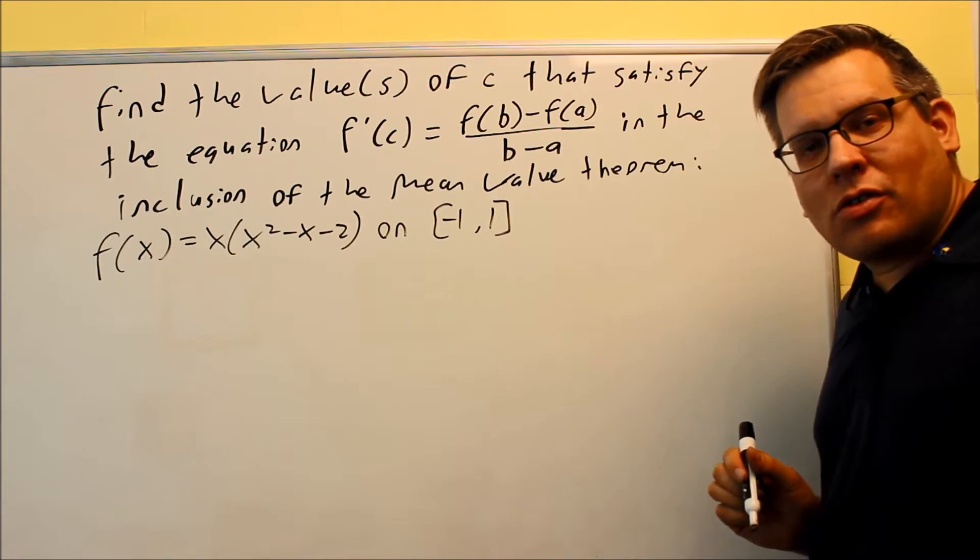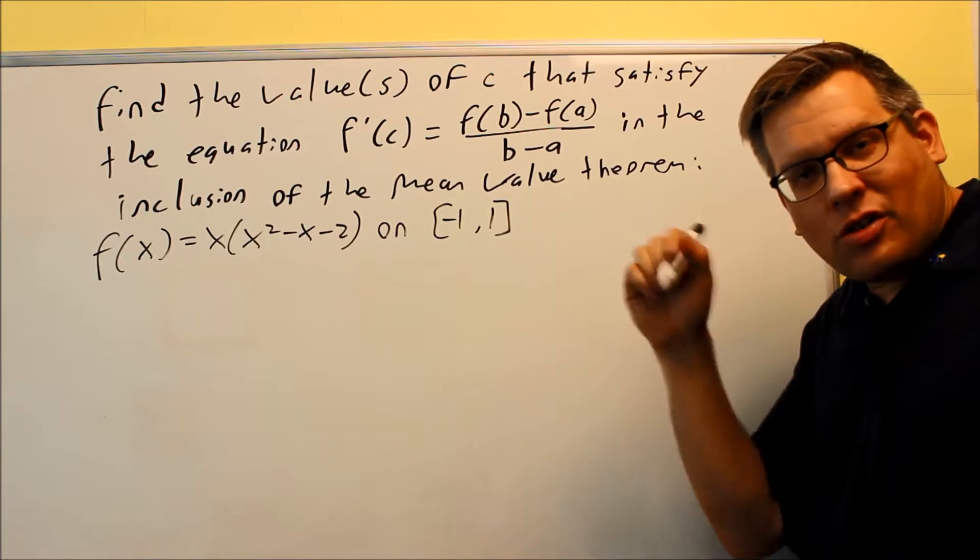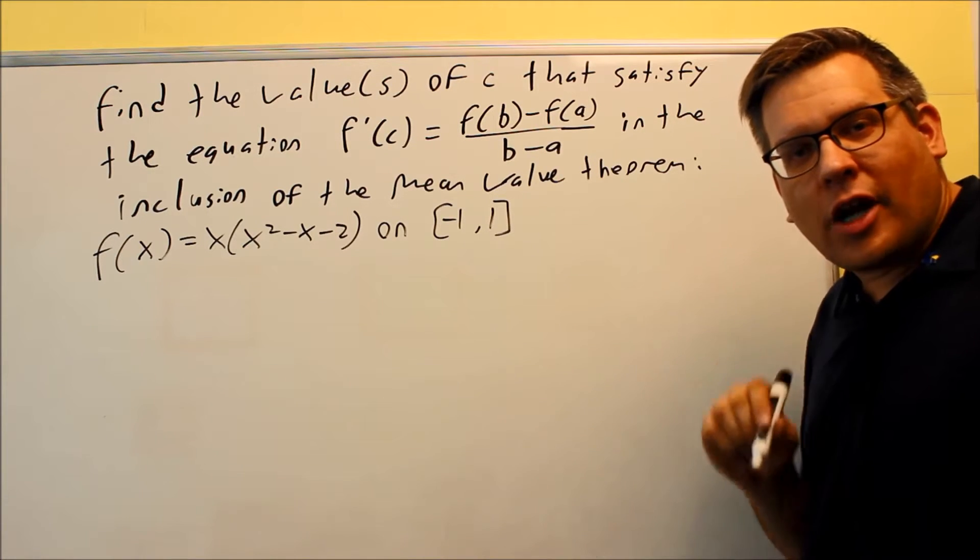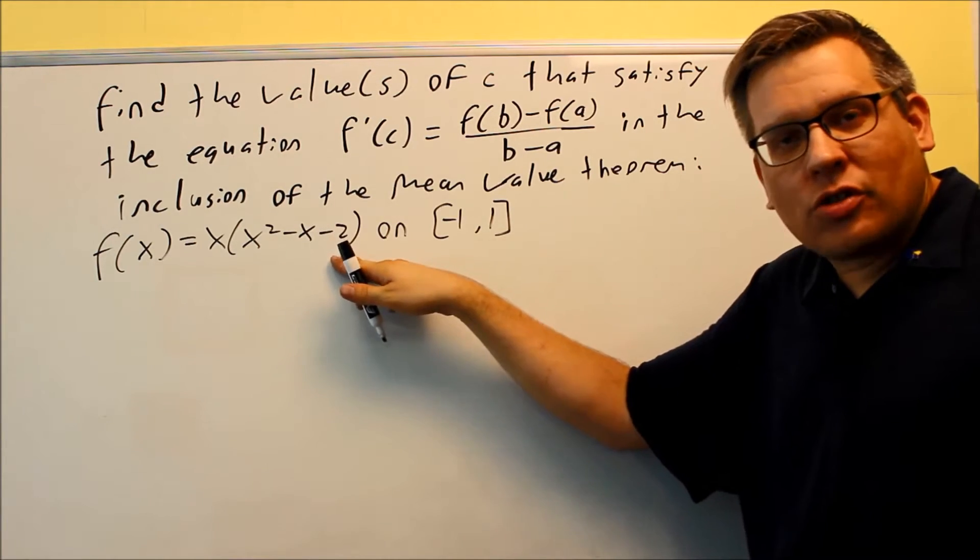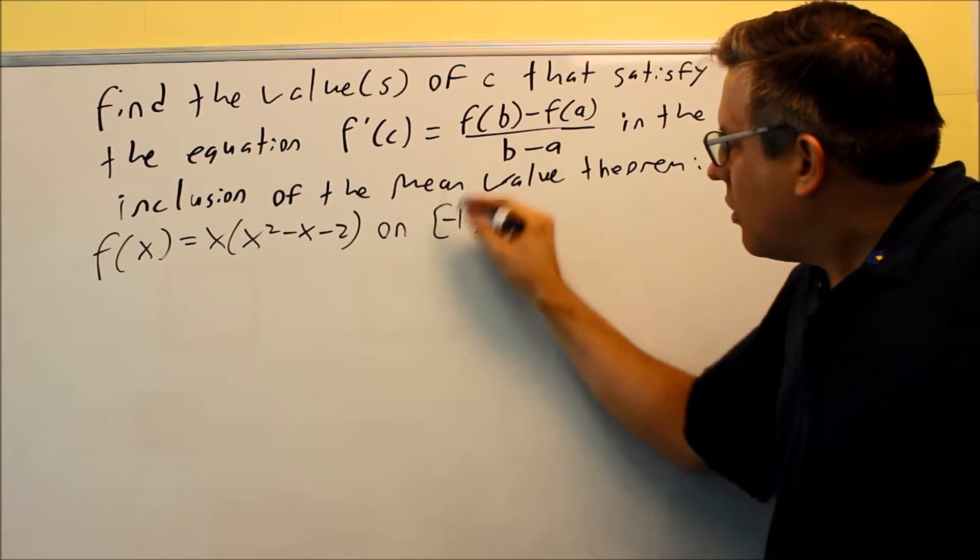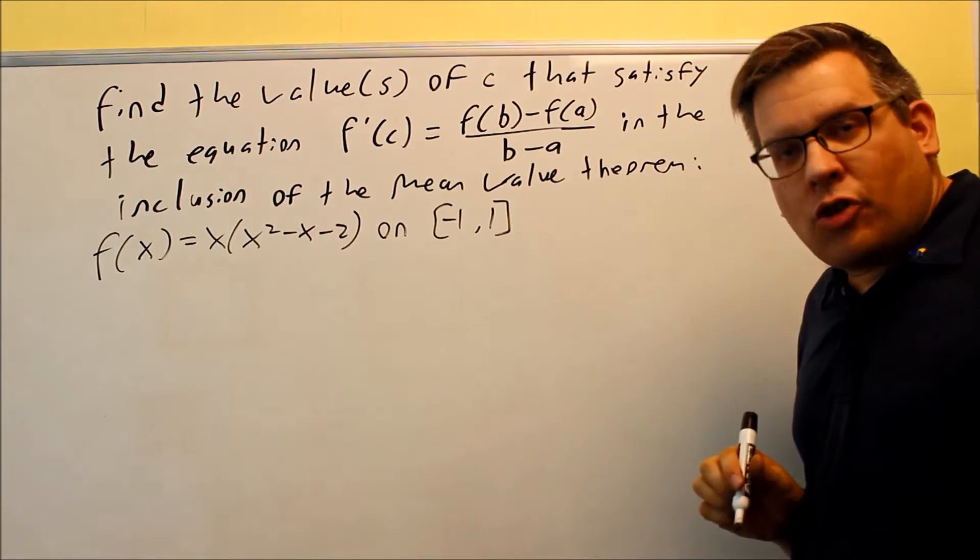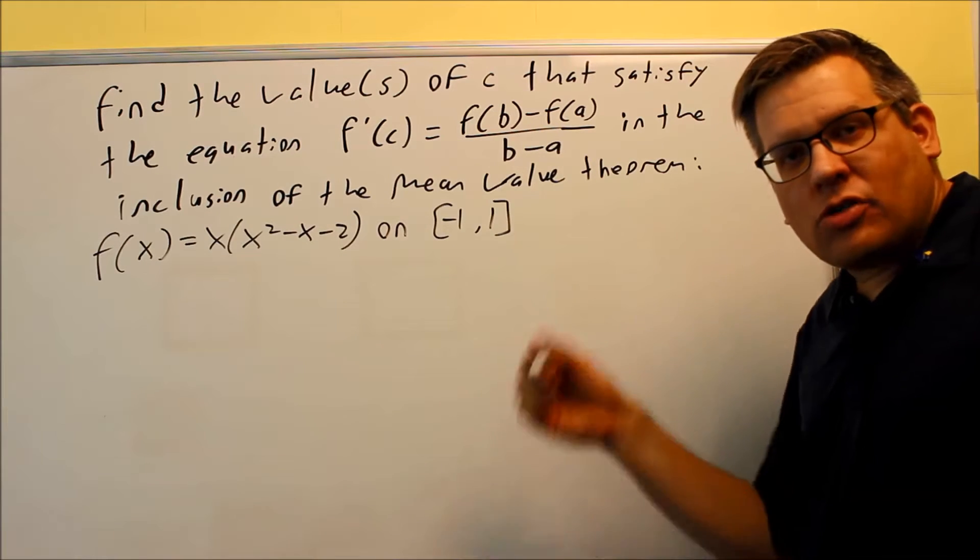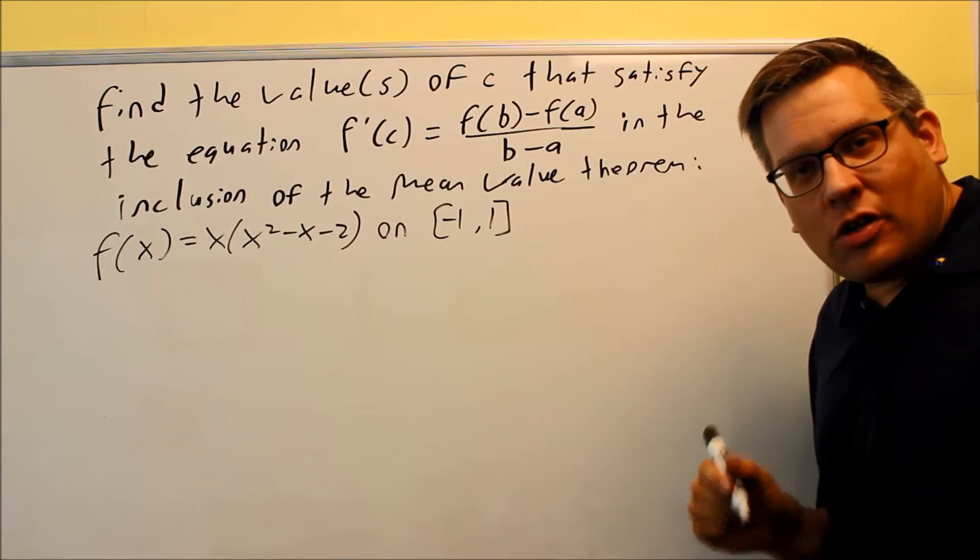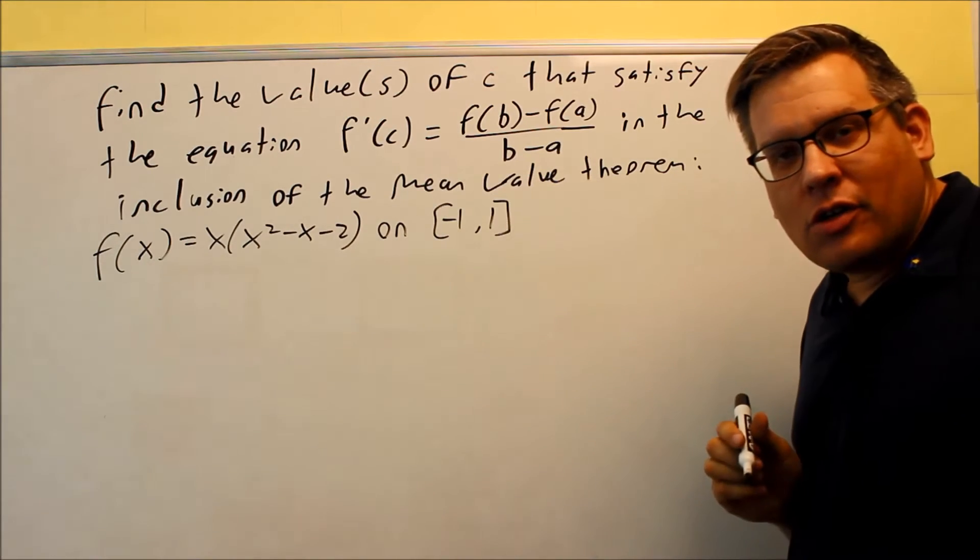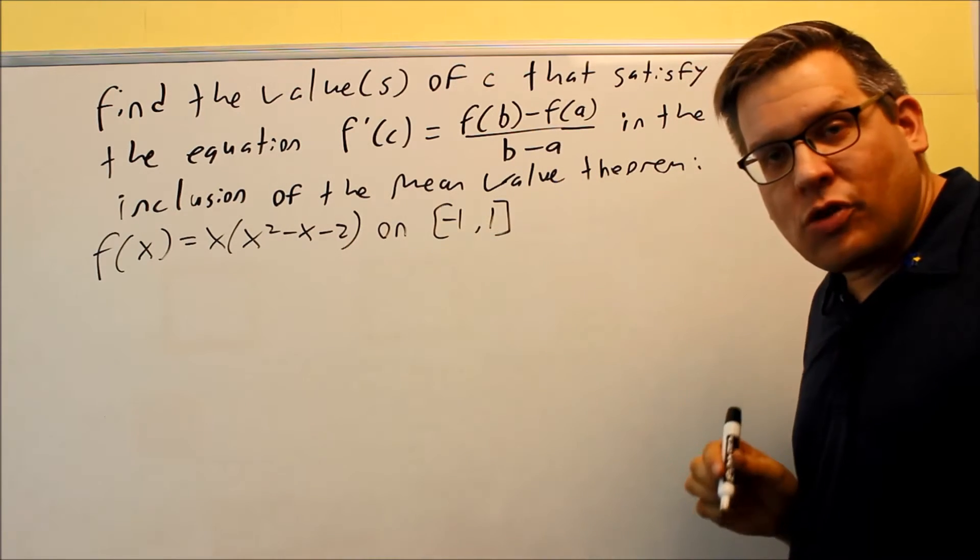The first thing we have to do, so I'm assuming you've already watched the previous video that talks about all the conditions where the mean value theorem can be applied. The first one is that the function is continuous, the original function is continuous on the closed interval from A to B. We see right here that this is going to be a polynomial. We know that polynomials are continuous for every value of X between negative infinity and positive infinity, so therefore we know the first one's automatically the condition's already met because it is continuous between negative 1 and 1.